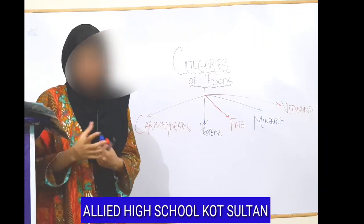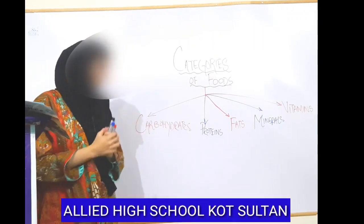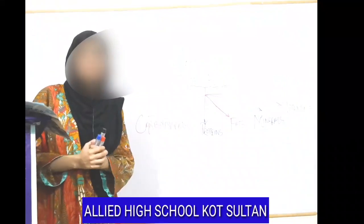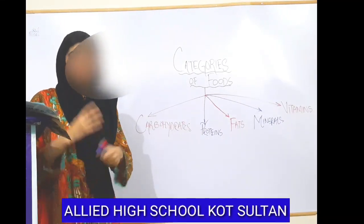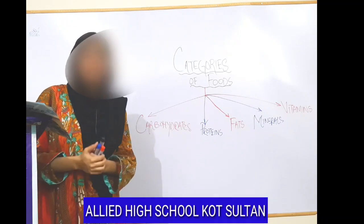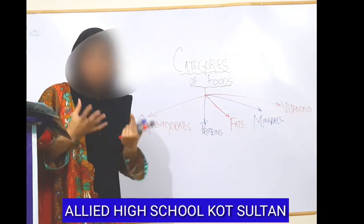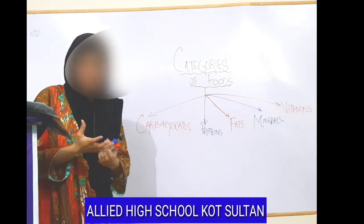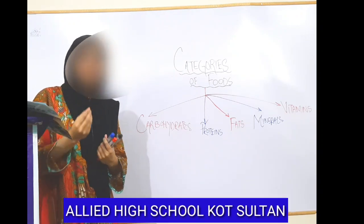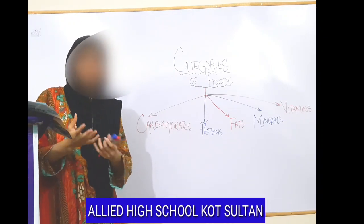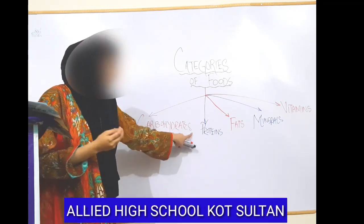The second category is proteins. Proteins are involved in repairing body tissues. We get proteins from meats, different kinds of meats, and pulses. Our damaged body parts are repaired with the help of proteins.